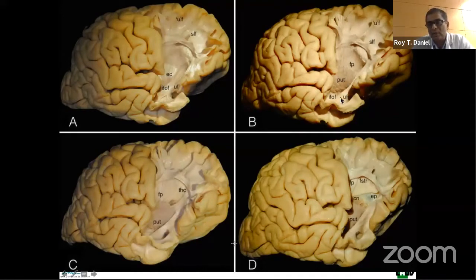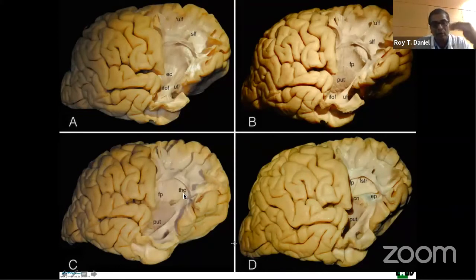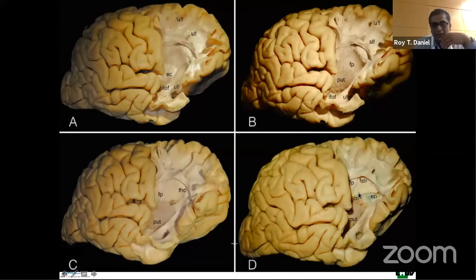As you go deeper, when you remove part of the IFOF and the uncinate fasciculus, you start seeing the frontal pontine fibers, which are part of the anterior internal capsule, and you can see their relation to the putamen. The internal capsule anterior part has three components organized lateral to medial. The most lateral is the frontal pontine fibers — descending. Just medial to that are the thalamocortical fibers from the anterior thalamic nuclei to the prefrontal lobe. Then you see the third component, the frontostriatal fibers, from the frontal lobe to the striatum.